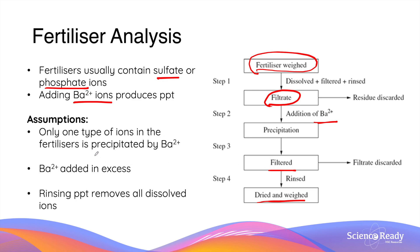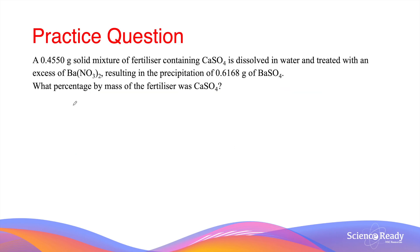Before calculating the results, it is important to note a few major assumptions. Since sulfate and phosphate ions can both be present in a fertilizer sample, this method only works if the fertilizer contains only one of these ions — either sulfate or phosphate is precipitated by barium ions. Since we do not know the exact amount of sulfate or phosphate ions, we assume the barium ions added are in excess, which is ensured by adding a large volume of highly concentrated barium solution. During filtration, rinsing the precipitate with distilled water is assumed to remove any substances other than the precipitate, though this is not always perfectly realistic.